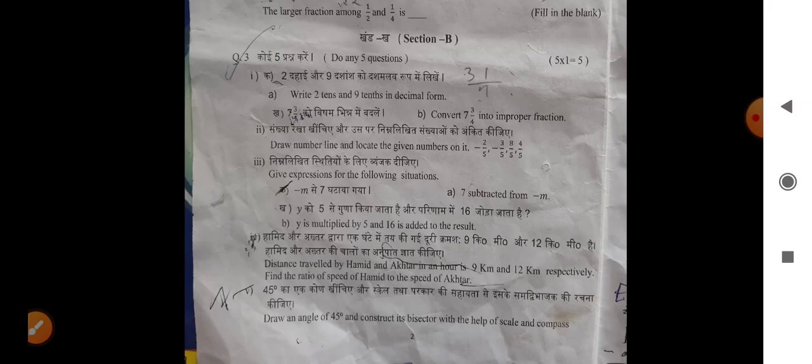Distance traveled by Hamid and Akhtar in an hour is 9 km and 12 km respectively. Find the ratio of speed of Hamid to the speed of Akhtar. Draw an angle of 45 degrees and construct its bisector with the help of scale and compass.